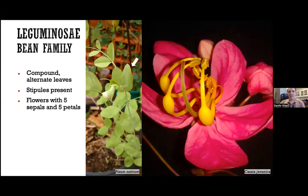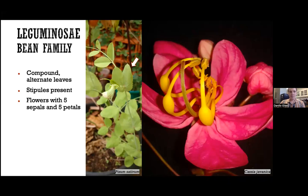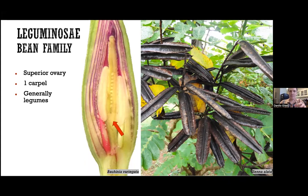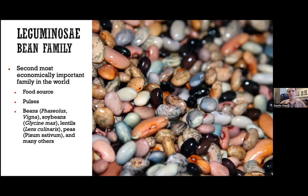Legumes are very easy to recognize. These plants have compound and alternate leaves, mainly with stipules. The flowers have five sepals and five petals. They always have a superior ovary with only one carpel, and the fruits are generally legumes. Since it's a huge family, we might expect there are exceptions from this archetype. Economically, it's the second most important family, just behind grasses. They are a great food source, also called pulses — within the family are the beans, soybeans, lentils, peas, and many other grains.